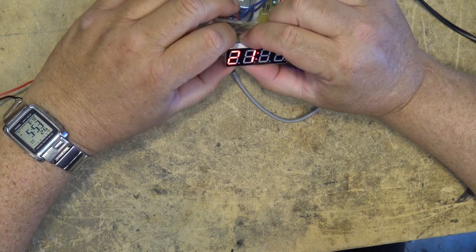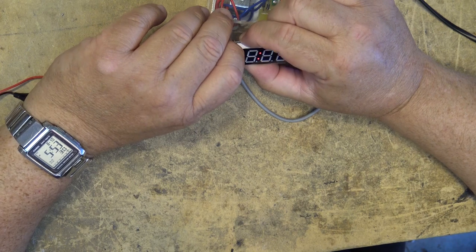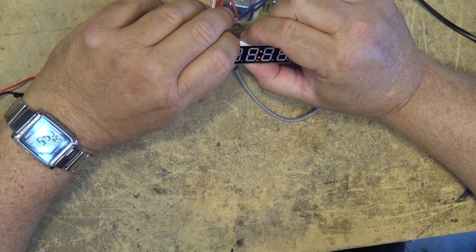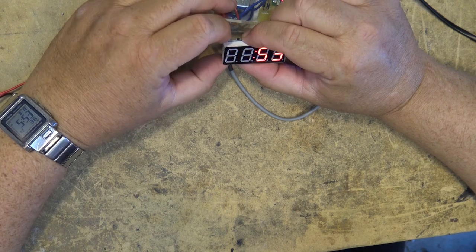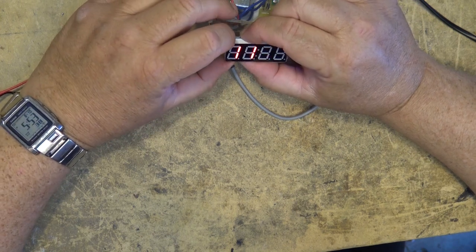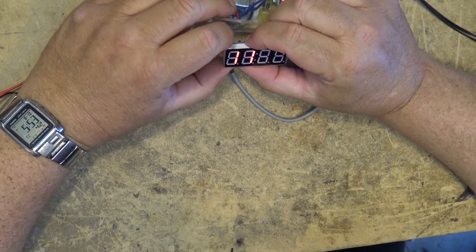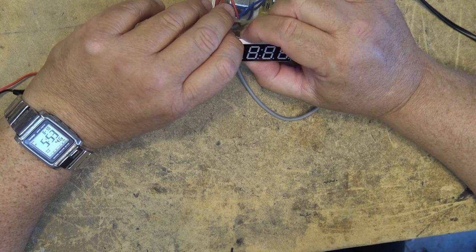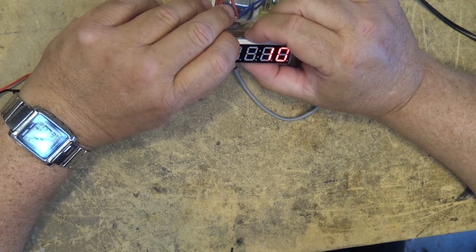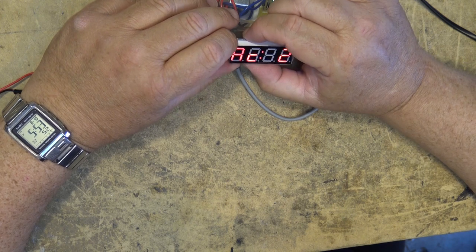We're in minute setting mode now. So minute setting mode first, click the button, and now it's hour setting mode, so I'll take it to 17:53. Next click is the day, so this is the 10th. Next click is the month.